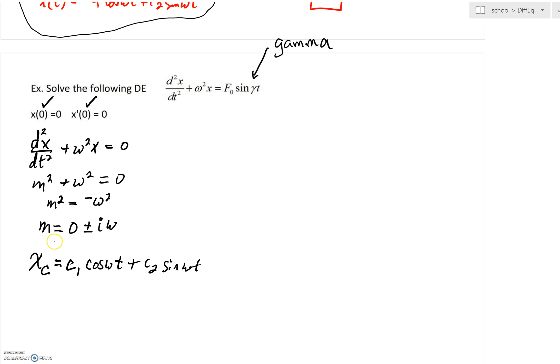We're just cutting straight to the chase where in general we would have had e^(0t) times c₁cos(ωt). Just filling in a little detail there. But we know that e^0 is going to cancel out to just one.